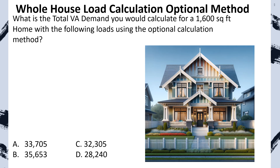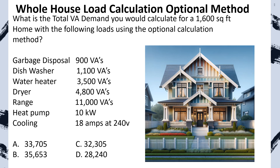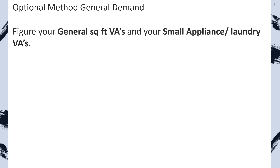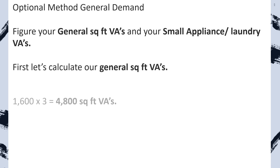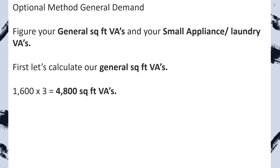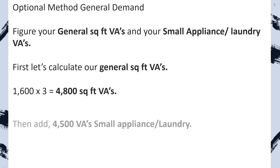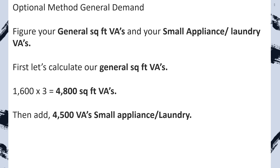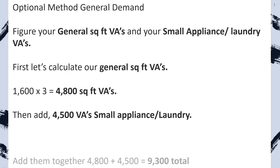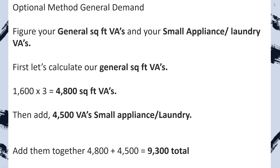What is the total VA demand for a 1,600 square foot home using the optional method? Take a minute to write down the loads so you can follow along — it's very similar to our standard method question but will go much smoother and quicker. Step one: get our general lighting demand. Take 1,600 square feet times three VAs per square foot equals 4,800 VAs, then add 4,500 for the two small appliance and one laundry circuits and total them up. We do not apply any demand factors at this point — a general demand factor comes later.